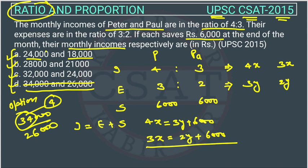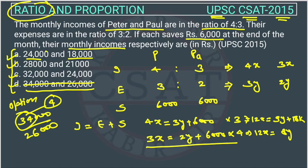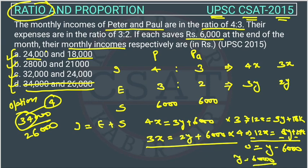Now we solve these equations. Multiply the first equation by 3: 12x = 9y + 18,000. Multiply the second equation by 4: 12x = 8y + 24,000. Subtracting gives 0 = y − 6,000, so y = 6,000.